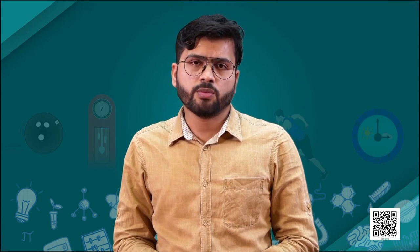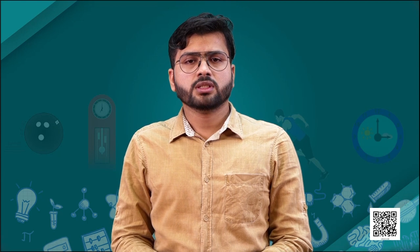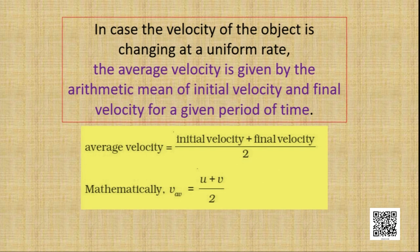But what if the velocity is changing uniformly? During uniform motion, how do we calculate the average velocity? The average velocity in case of uniform motion can be calculated as the initial velocity plus the final velocity divided by 2. That means we take the arithmetic mean of the velocity. Mathematically it can be expressed as: initial velocity as u, final velocity as v, so average velocity = (u + v) / 2.